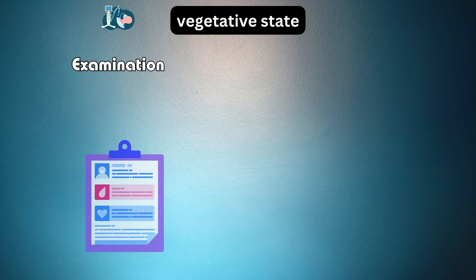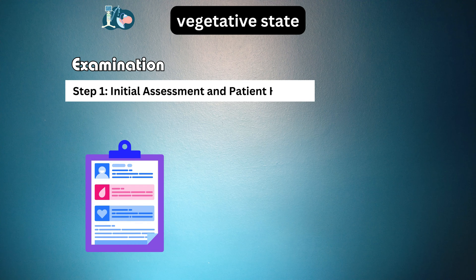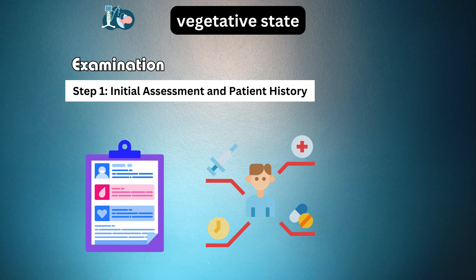Step 1: Initial assessment and patient history. Understanding the patient's background and the history of their condition is our starting point. It's crucial to gather information about the cause, duration, and prior medical interventions related to their vegetative state.